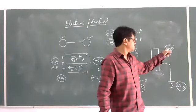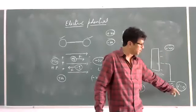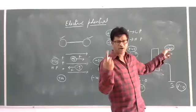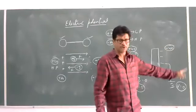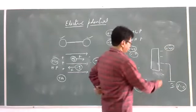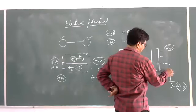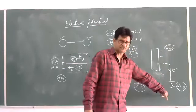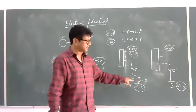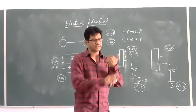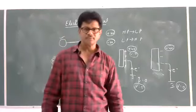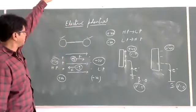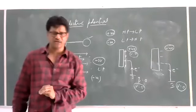The negatively charged particle will always move from lower potential to higher potential. So the electrons will move from the negatively charged body to the earth. The main use of electric potential is that we can give the direction of the flow of a charge.